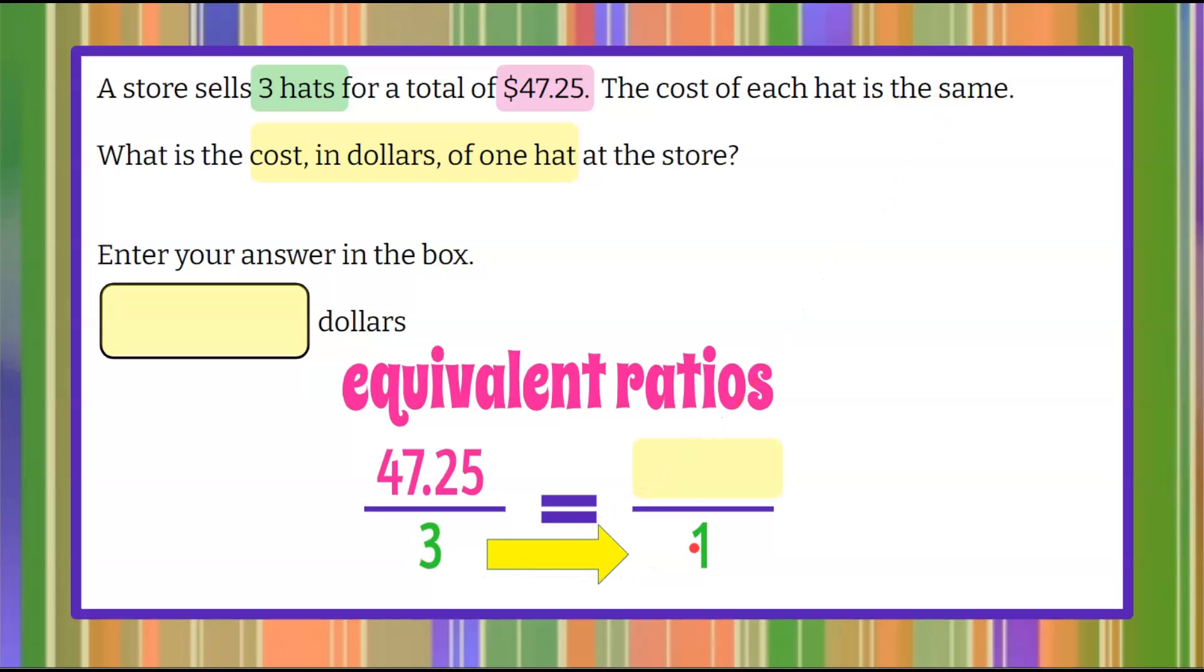So three to one mathematically is three divided by three is one. Whatever I do to this part of the ratio to keep it an equivalent ratio, I must do the same to the numerator. So $47.25 divided by three will give me my cost for one hat.